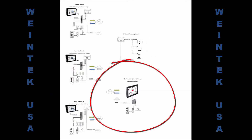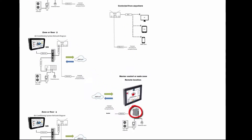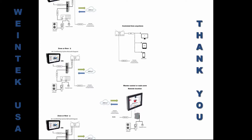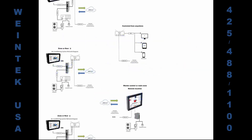Here we have an example of basically the same system, except on our master unit it's running CODIS and connected to the IR series equipment. This solution offers the same remote capabilities as well as the ability to interact with each other remotely and through the AWS. The main difference is the elimination of the PLC from the system. We are also developing a BACnet server driver, which will be a nice solution for adding this equipment to existing building management systems.